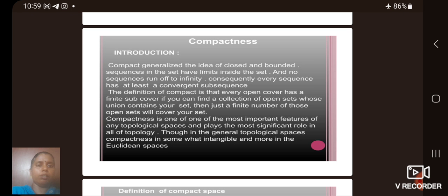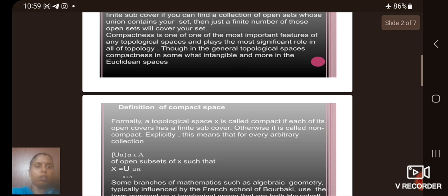The definition of compact is that every open cover has a finite subcover. If you can find a collection of open sets whose union contains your set, then just a finite number of those open sets will cover your set. Compactness is one of the most important features of any topological spaces and plays the most significant role in all of topology.